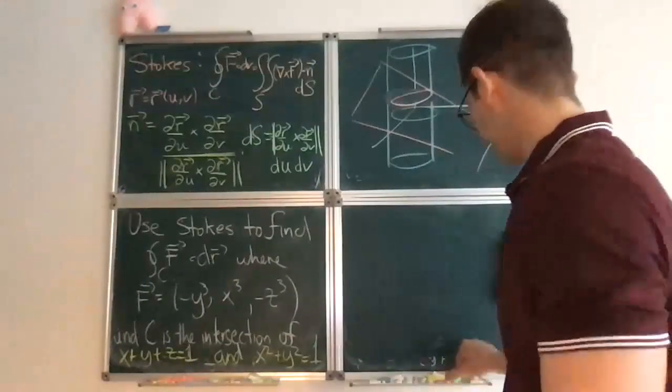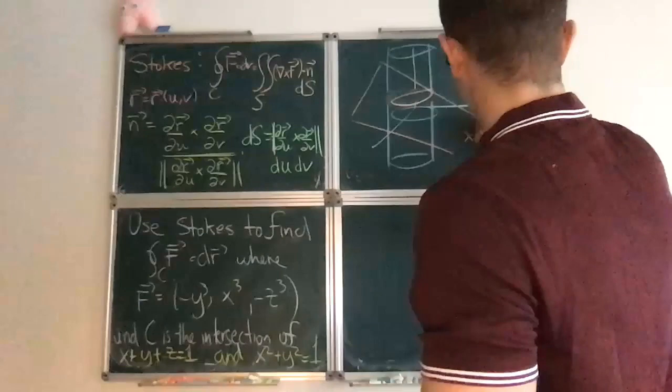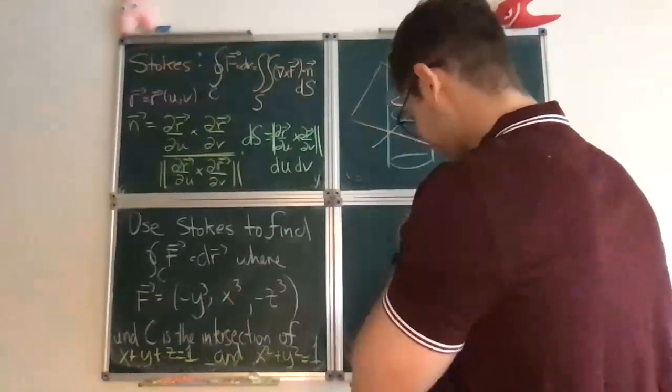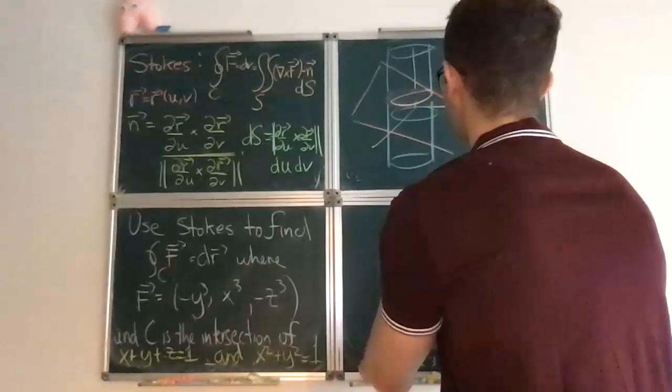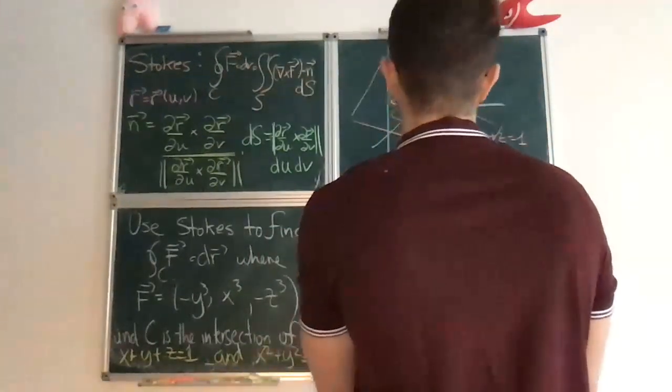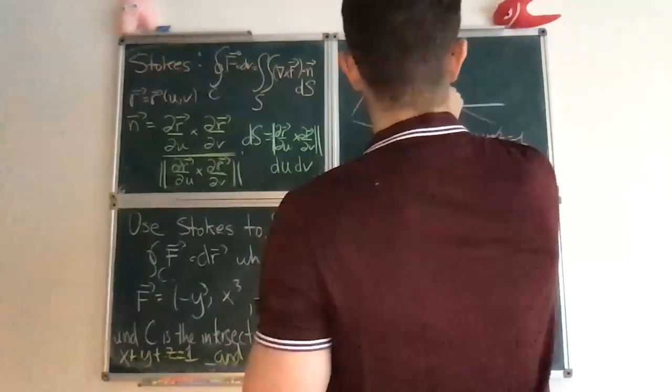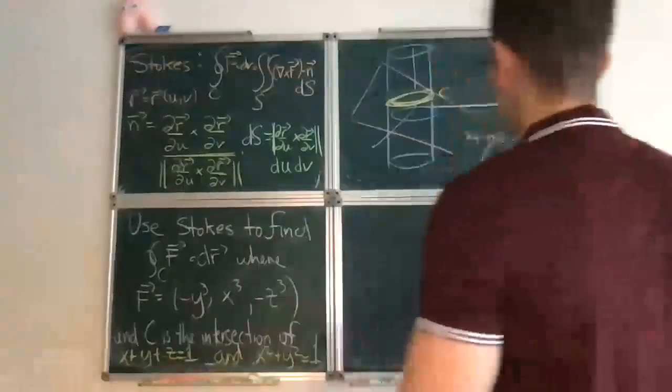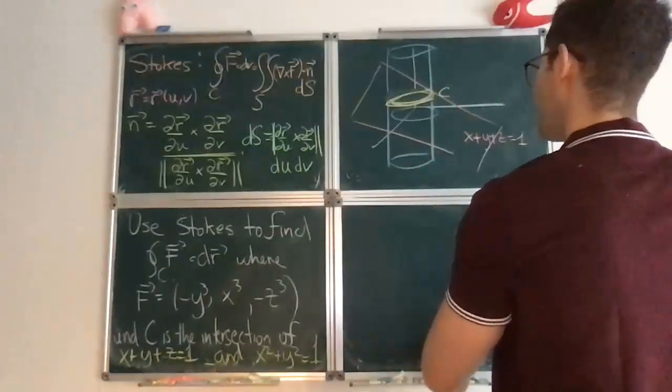It will cut, slice the cylinder in what will look like a tilted circle, or like an ellipse. So here's the plane, x plus y plus z equals 1. And the curve that we're talking about, that we care about, is this curve.